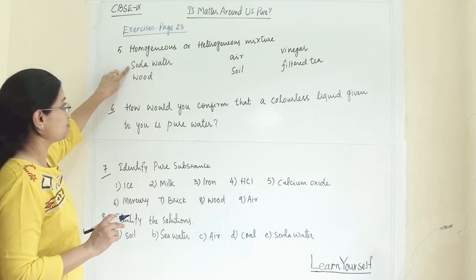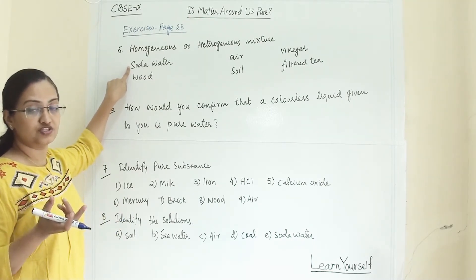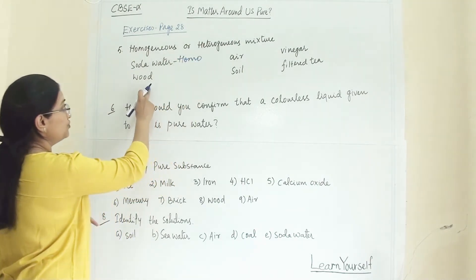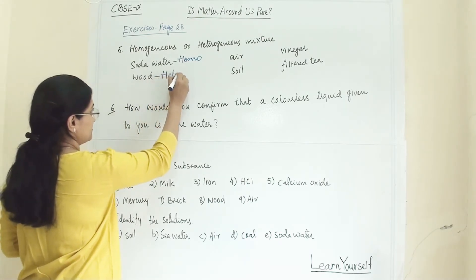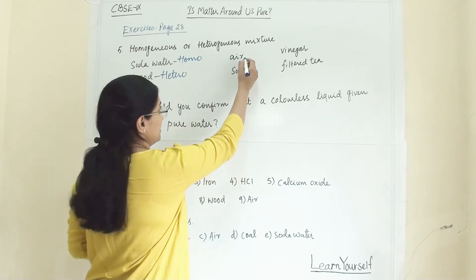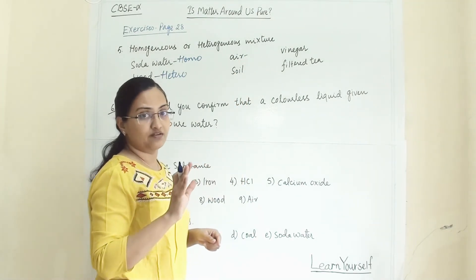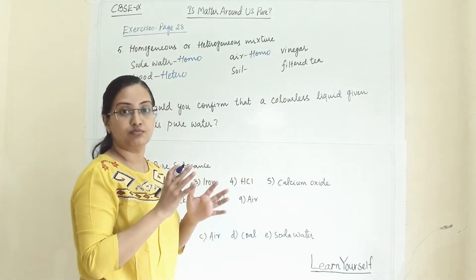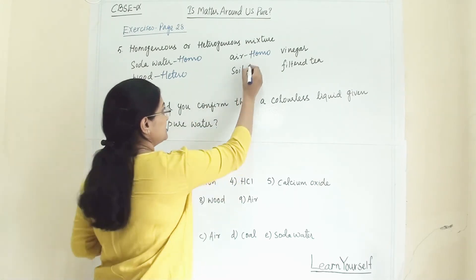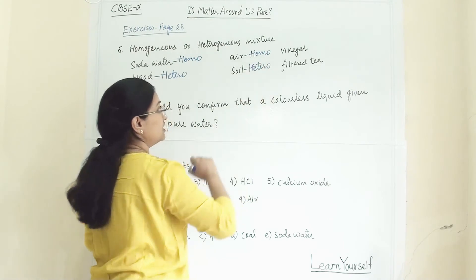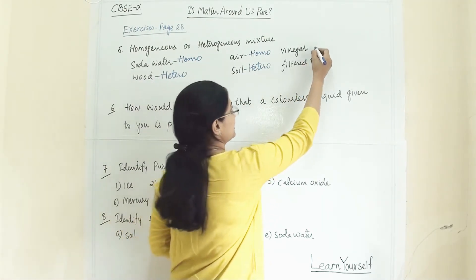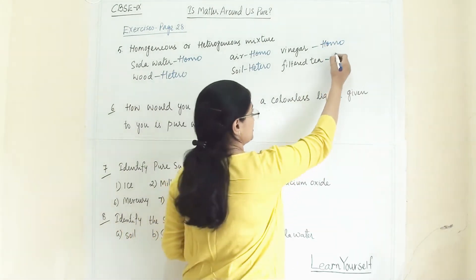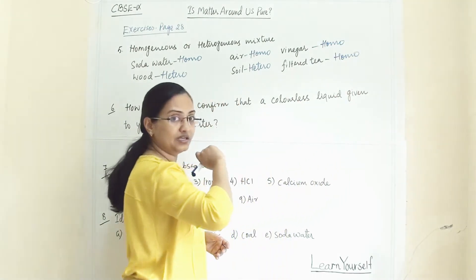Soda water: homogeneous — all components are evenly mixed. Wood: heterogeneous. Air: taking pure air, it is homogeneous because all gases are evenly mixed. Soil: heterogeneous. Vinegar: homogeneous — all components are evenly mixed. Filtered tea: also homogeneous — all components are evenly mixed with each other.